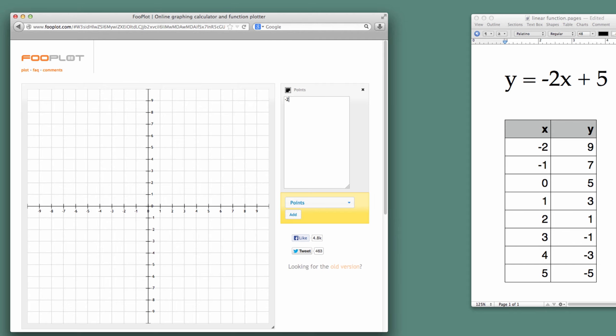So I'm going to put in minus 2, 9. Minus 1, 7, and I'm hitting Return after each y-coordinate. 0, 5. 1, 3. And you can see the points are being generated as I type them in.